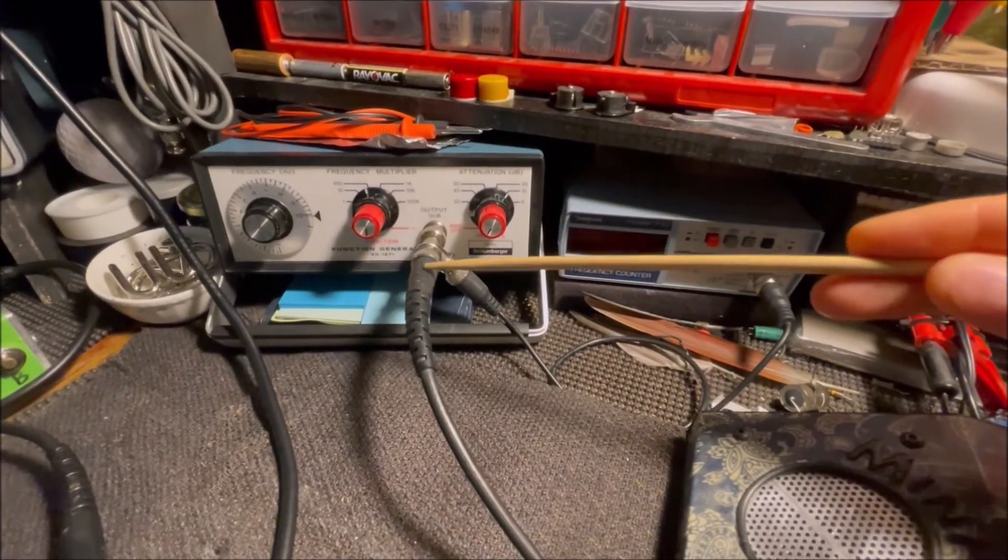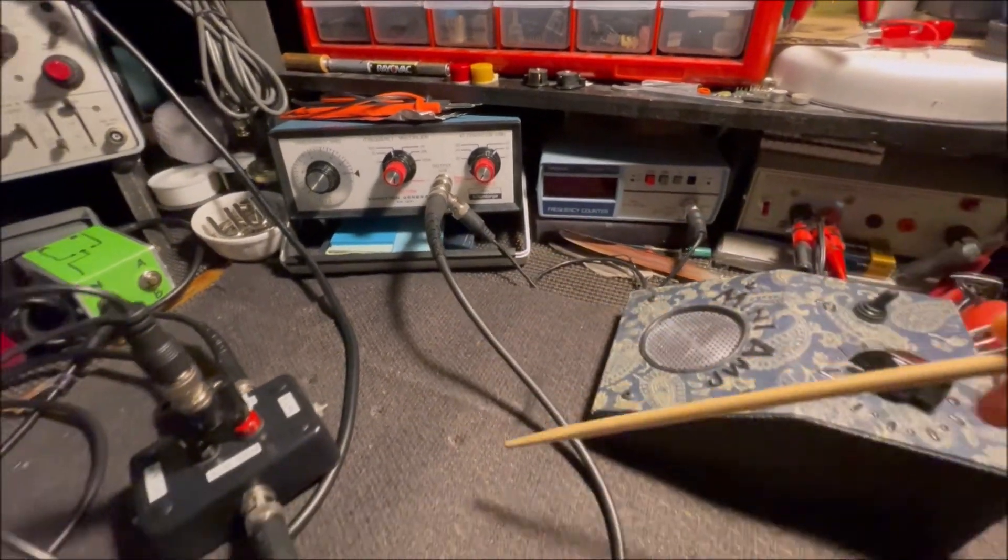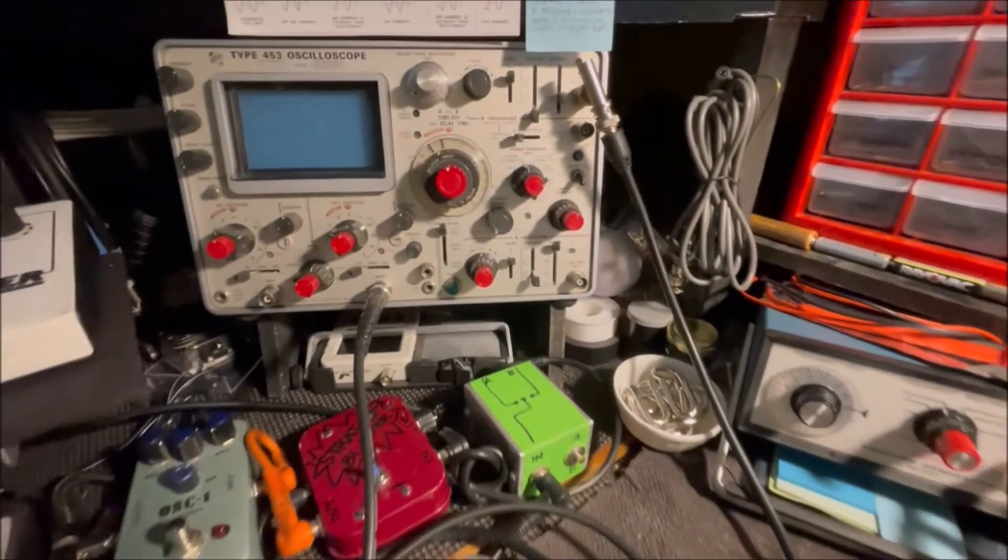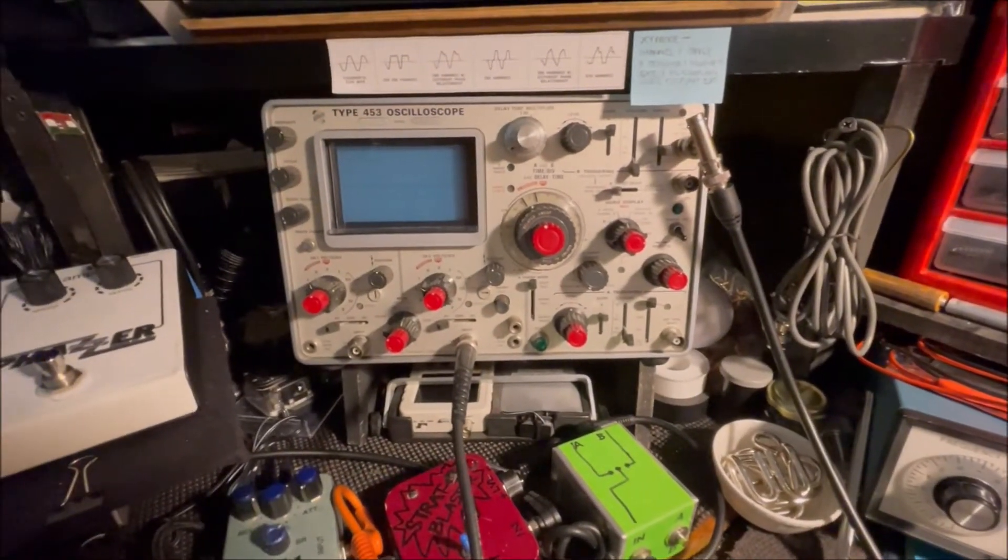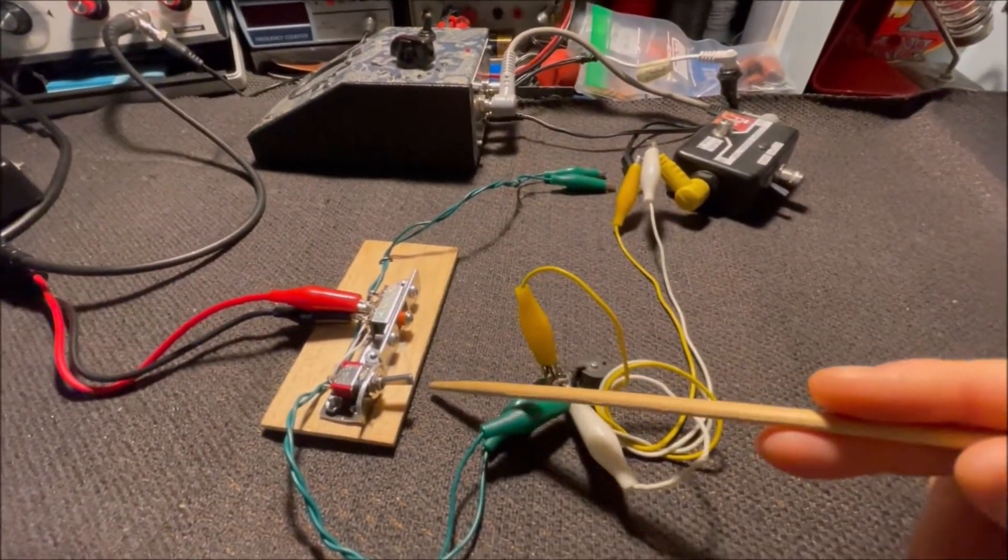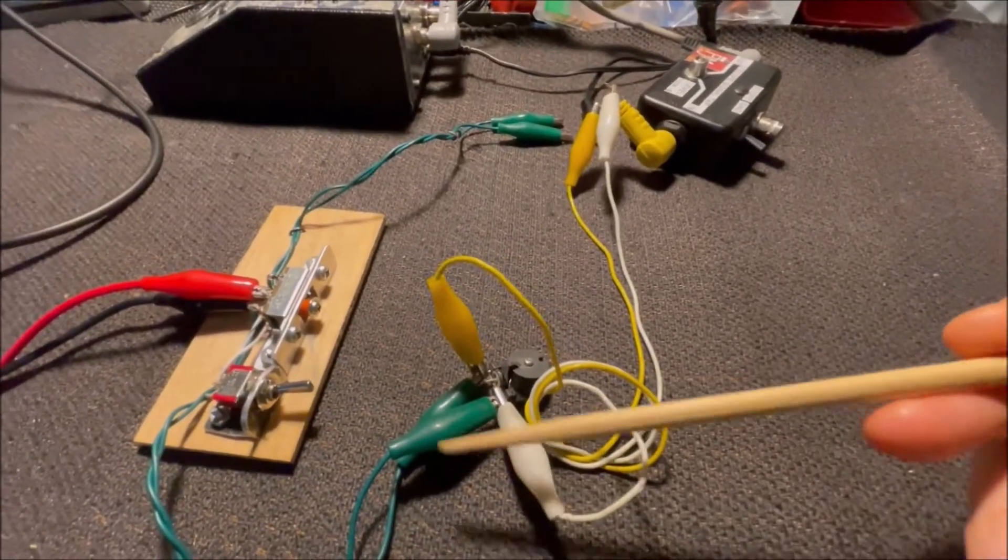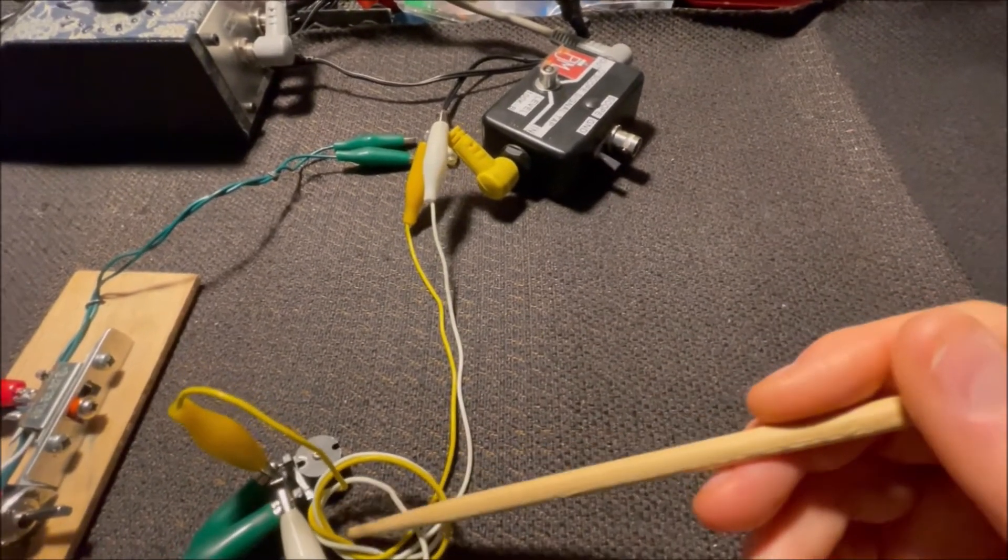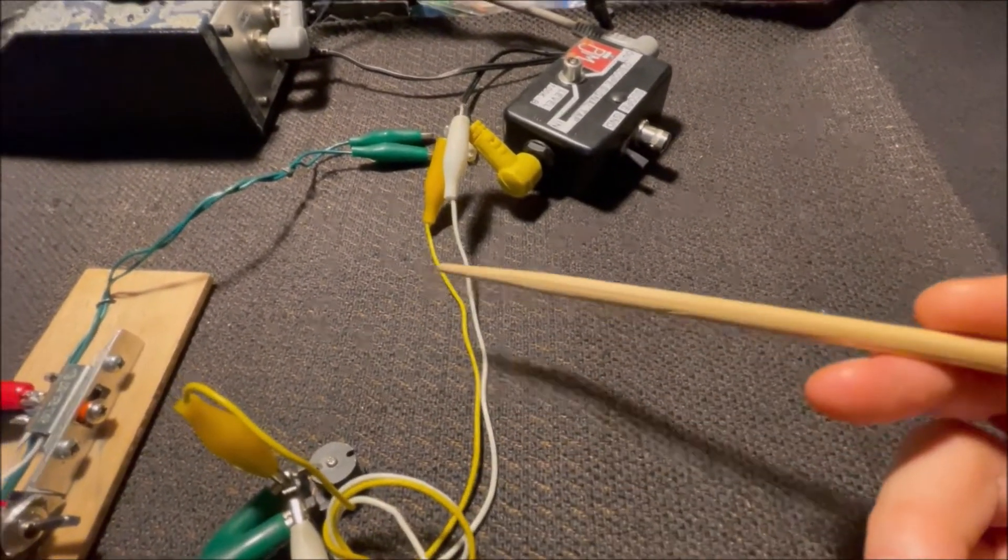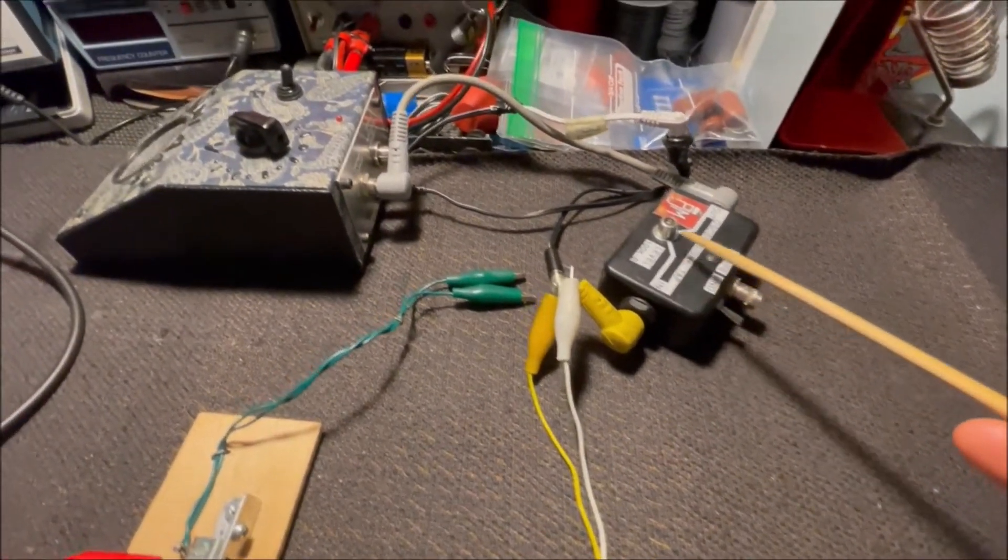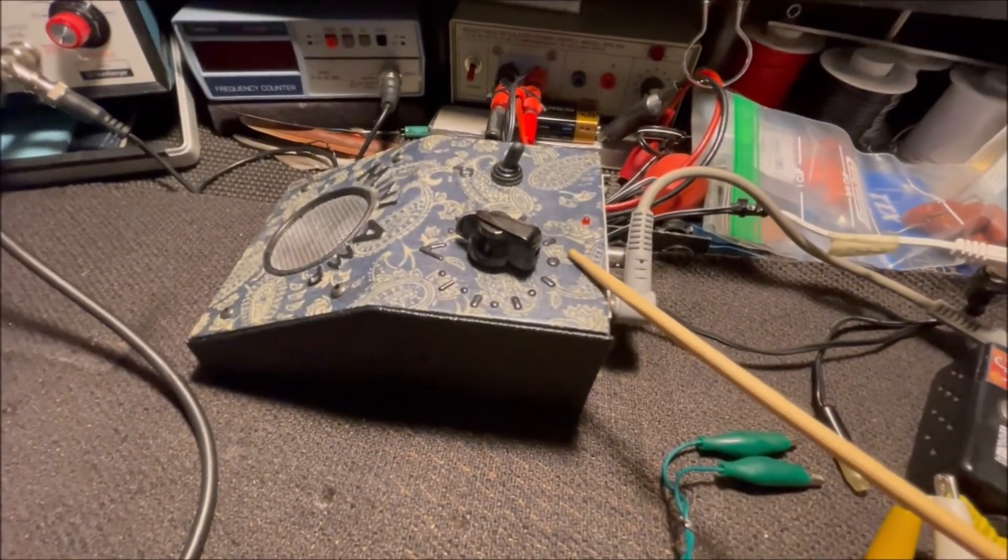So my test setup is pretty simple. I'm just going to take the output of this function generator and feed it through this oscilloscope octopus. I had it set up so I can look at the waveforms on the Tektronix 453 oscilloscope. And then here's my device under test setup. I'm just going to piggyback a pair of leads off of the inductor here that we're testing and go through this little arrangement here to my little mini amp so we can hear it.